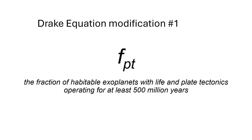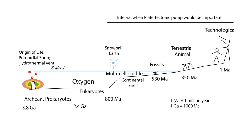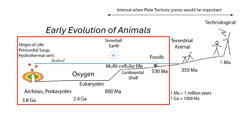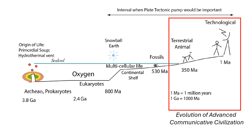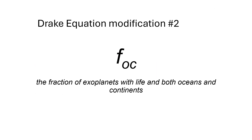The prolonged operation of plate tectonics thus should be a key variable for a modified Drake equation. We further suggest that both continents and oceans are required for the evolution of advanced communicative civilizations. This is because the early evolution of simple life must happen in water, but evolution of life capable of creating technology must happen on land. This is because only on land can the sky be studied, tool-making and metallurgy emerge, and electricity be mastered. Thus, the presence of large oceans and continents is another key variable for a modified Drake equation.